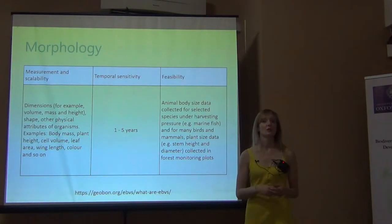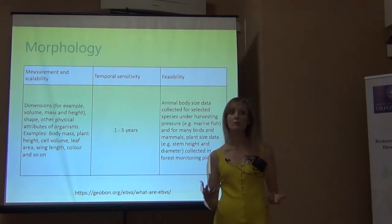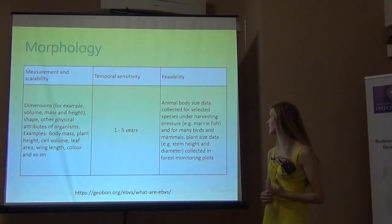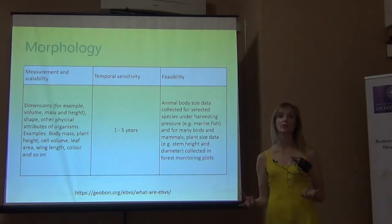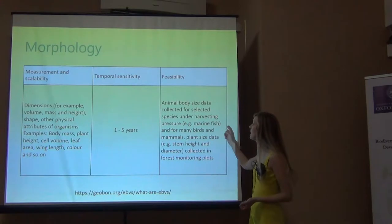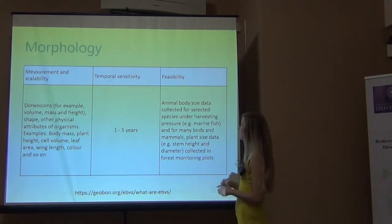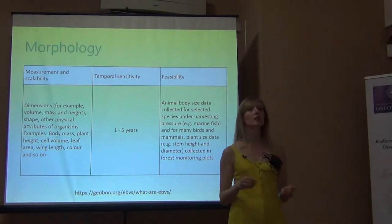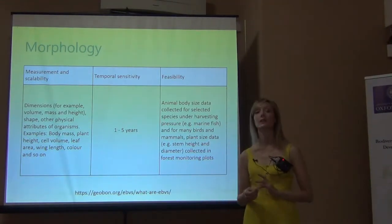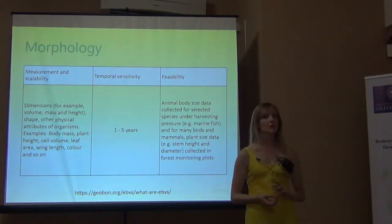We have this data because marine fisheries are a really large source of income and give a lot of money to various countries, so we're very interested in how they're changing through time. We have a lot of data on this, and we have a lot of data for large megafauna, things like birds, mammals, and we actually have a lot of data on plant size, mostly because of agriculture and how plants are changing through time in size and specific traits. But other than that, there's not a lot of data out there.